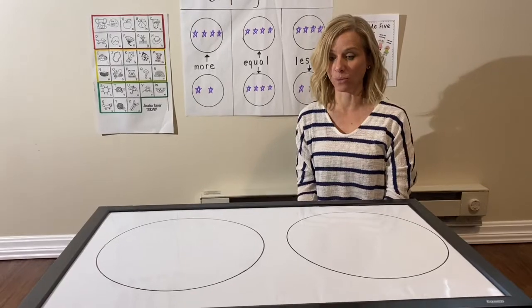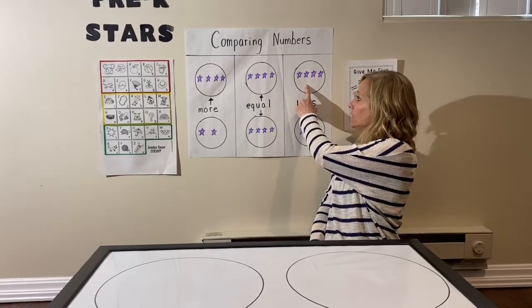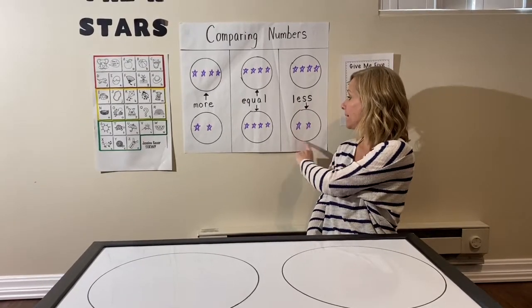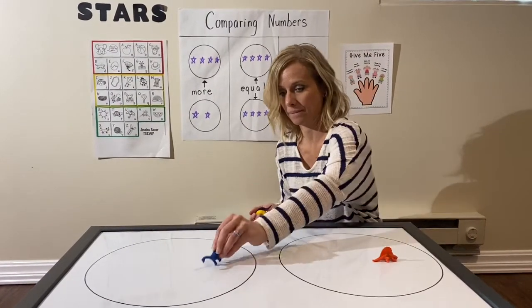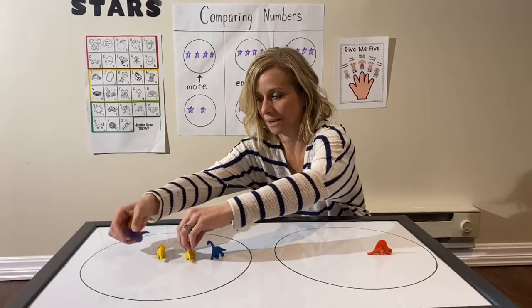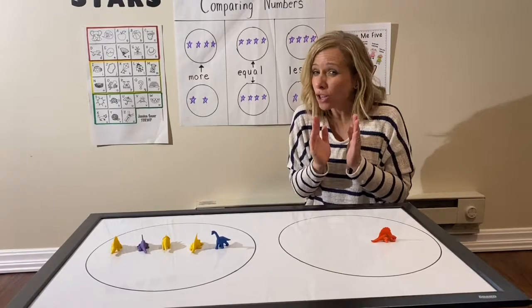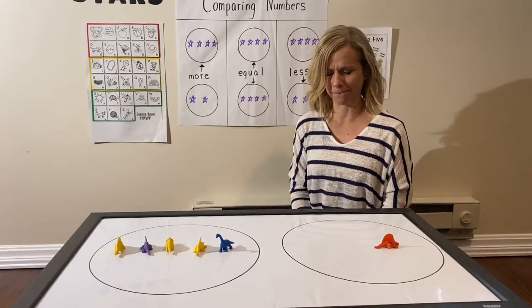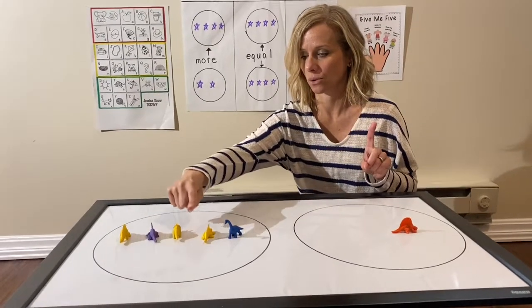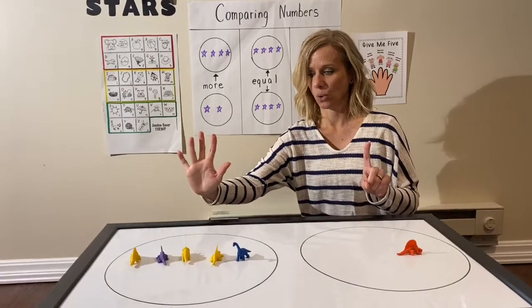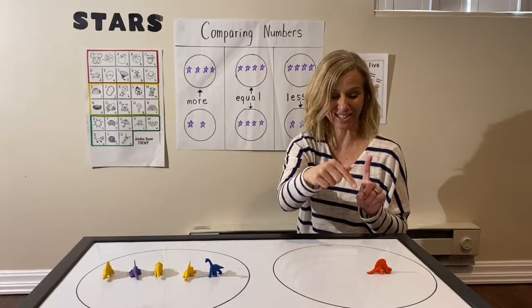Now we're going to see which group has less dinosaurs — that means a smaller number. Less. There are four stars in this group and two stars in this group, so this group has less stars, a smaller number. Close your eyes — we're going to compare our dinosaurs. Open your eyes. The question is which group has less, a smaller number of dinosaurs? We have to count. In this group I see one dinosaur. In this group: one, two, three, four, five. Which group is less? You're right — this group with one dinosaur has less.